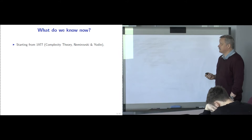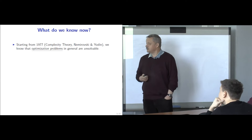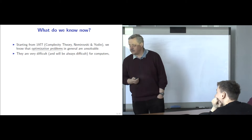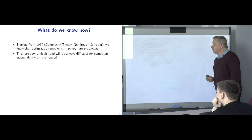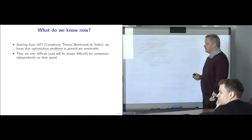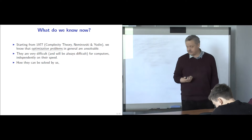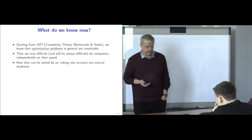Now we know much more. Starting in 1977, when the complexity theory of optimization was developed, we know that in general, optimization problems are not solvable — they are very difficult and will always be difficult even for computers, independent of their speed, memory, and power. Therefore, the question is how we can solve these kinds of problems, taking into account that the majority of people have difficulties even with usual arithmetic.